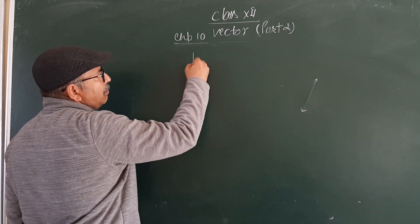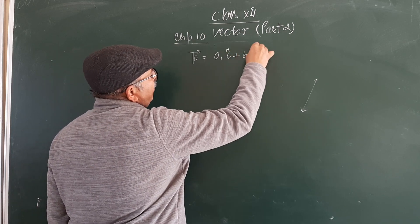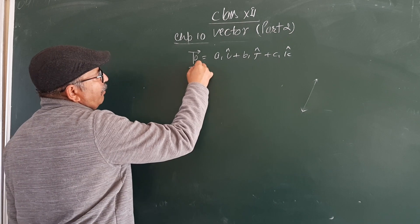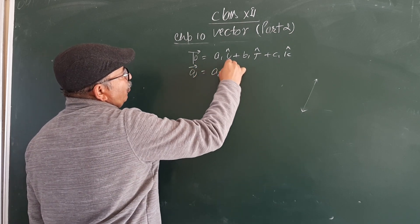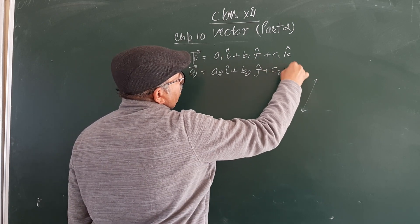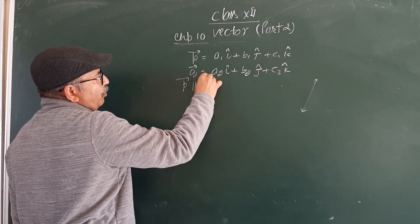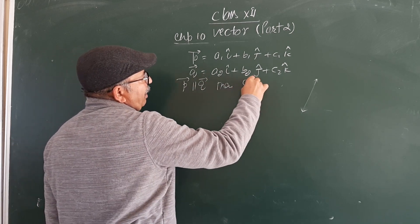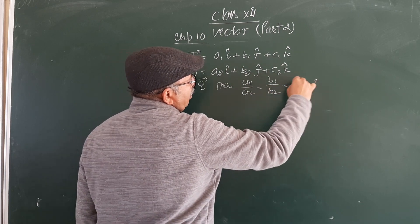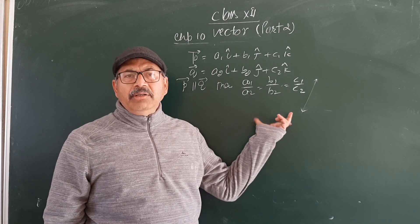There are two vectors: P = A1i + B1j + C1k, and Q vector = A2i + B2j + C2k. If P is parallel to Q, then the direction ratios will be proportional: A1 upon A2 = B1 upon B2 = C1 upon C2.